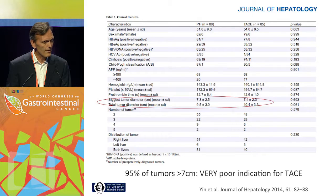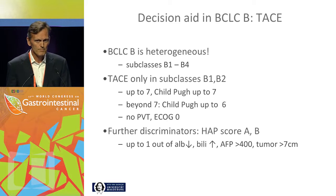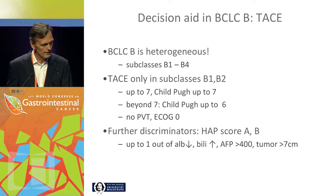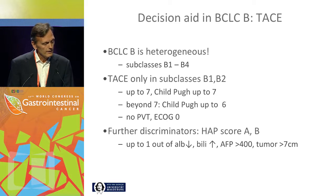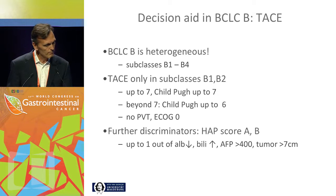The question is: are there alternatives? First, a decision aid for BCLCB: chemoembolization should be considered in subclasses B1 and B2 — within the up-to-7 rule, Child-Pugh up to 7. Beyond 7, Child-Pugh score should only be 6, there must be no portal vein infiltration, and ECOG 0 is still under dispute. It can be difficult to differentiate between ECOG 0 and 1, but that is left for individual decision.